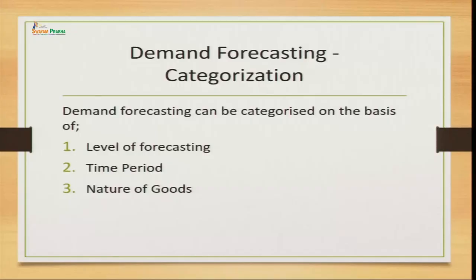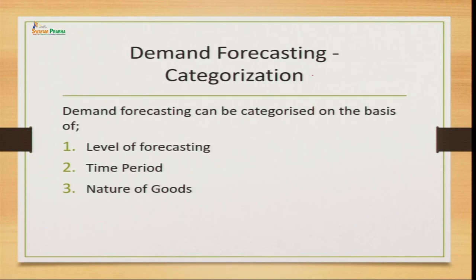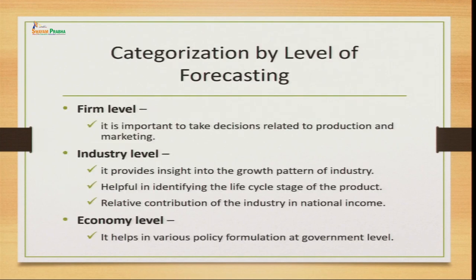Demand forecasting is done on different categorizations. There are three bases on which we categorize before going for forecasting: what level of forecasting we are doing, for which period of time we are forecasting, and for what nature of goods we are forecasting. These are important factors you should be aware of before starting demand forecasting. The levels are classified into three categories: firm level, industry level, and economy level.